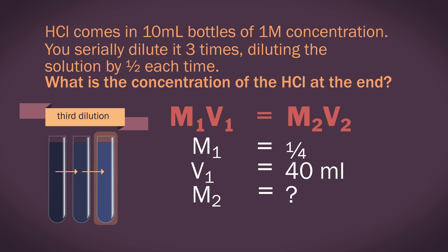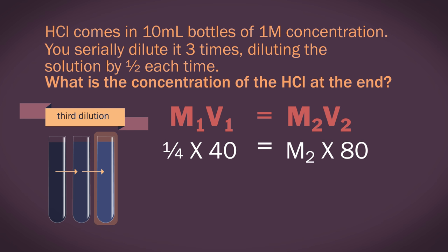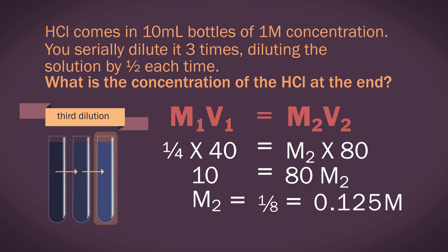M2 we do not know. V2 equals 80 mL because we have already added another 40 mL of water to dilute it again by half. And substituting in these values gives us a quarter times 40 equals M2 times 80. So 10 equals 80M2, and rearranging gives us M2 equals an eighth, which is 0.125 Molar.